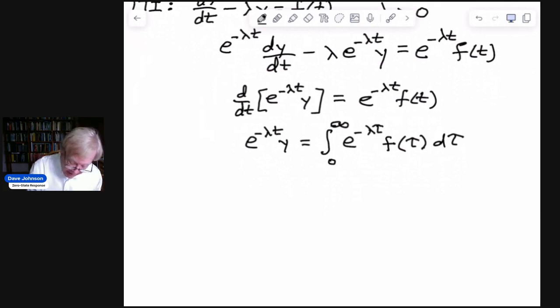Now, multiply both sides by e^(λt). So on the left side, you get y. On the right side, you get e^(λt) times the integral from 0 to infinity e^(-λτ) times f(τ) dτ.